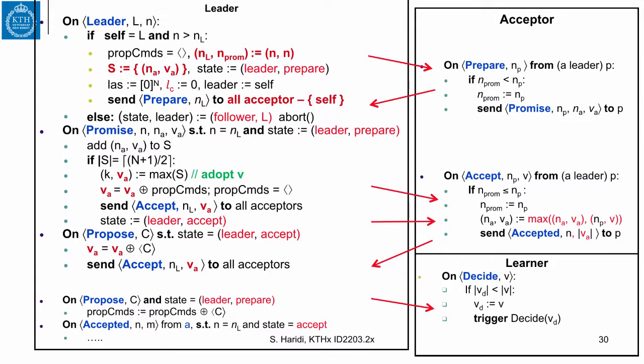So let's look now to the algorithm, what changes we have done. We see that this is the code for the leader. Here, the new NL is N, and the promise is N now. So you updated the promise in his accepted role. He immediately adds the pair where the last round where he accepts the value and the sequence accepted. And then he sends to all acceptors except himself, because we have already added this value. The rest is as usual when we get a promise.